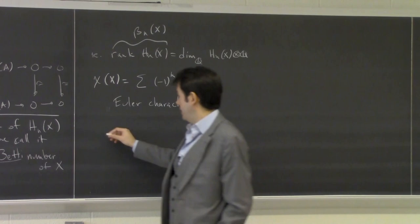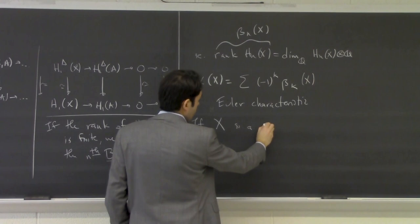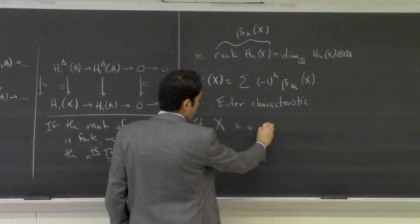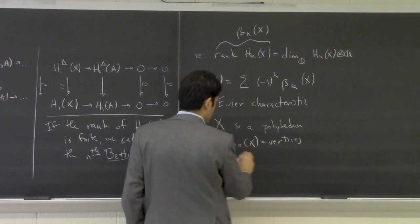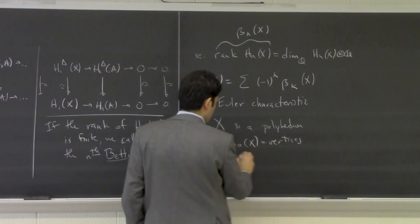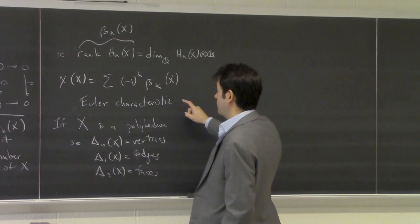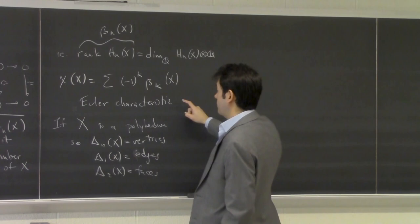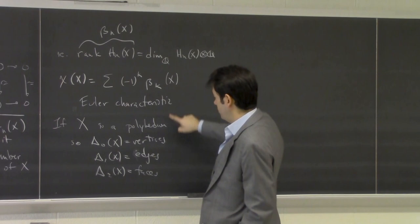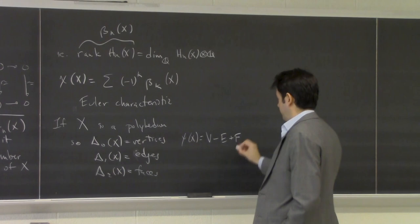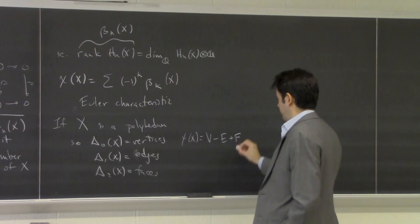To connect this back to how you might have seen the Euler characteristic before: if X is a polyhedron, then Δ_0(X) is the vertices, Δ_1(X) are the edges, Δ_2(X) are the faces — as free abelian groups. If these are finite, you can show the Euler characteristic computed from homology equals the one computed before passing to homology: the number of vertices minus the number of edges plus the number of faces.